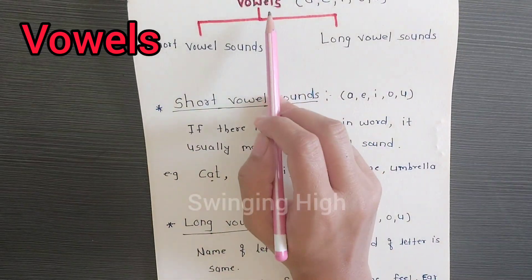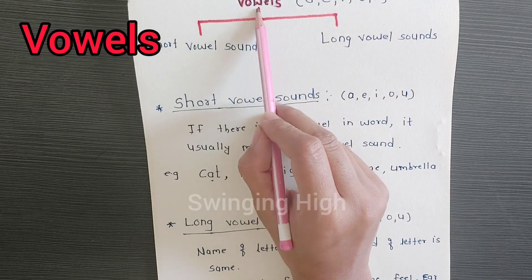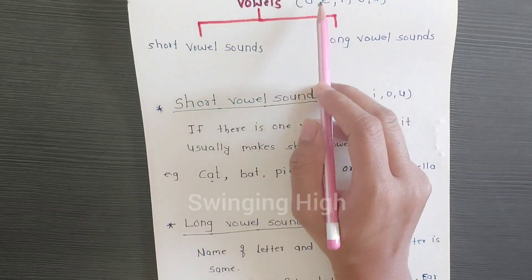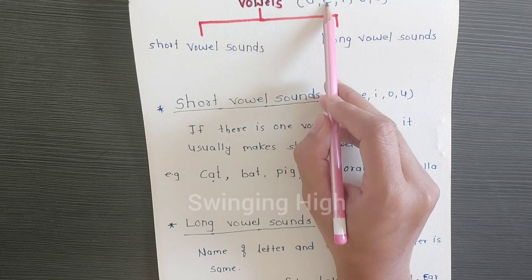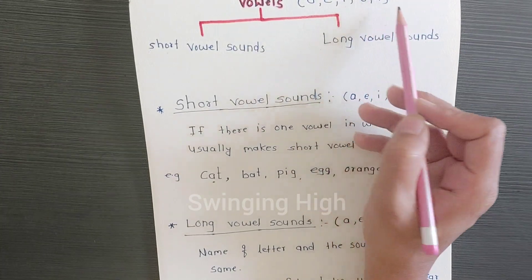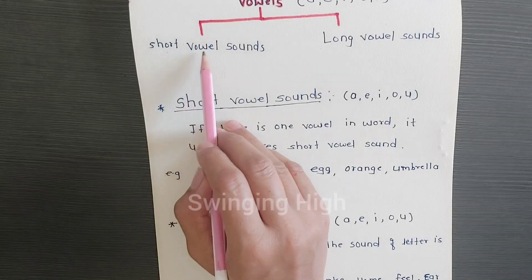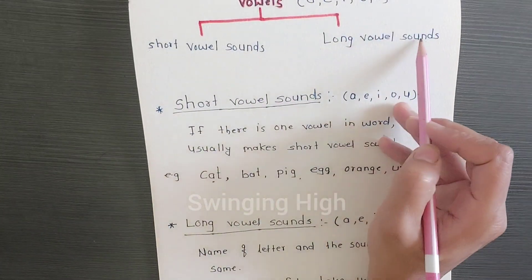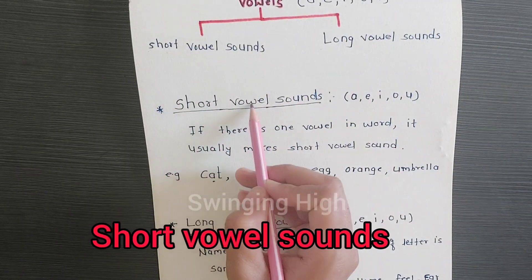Hello friends, welcome to Swinging High. Today we are going to learn vowels. We all know what vowels are: A, E, I, O, U. Let's see the types of vowels: short vowel sounds and long vowel sounds.